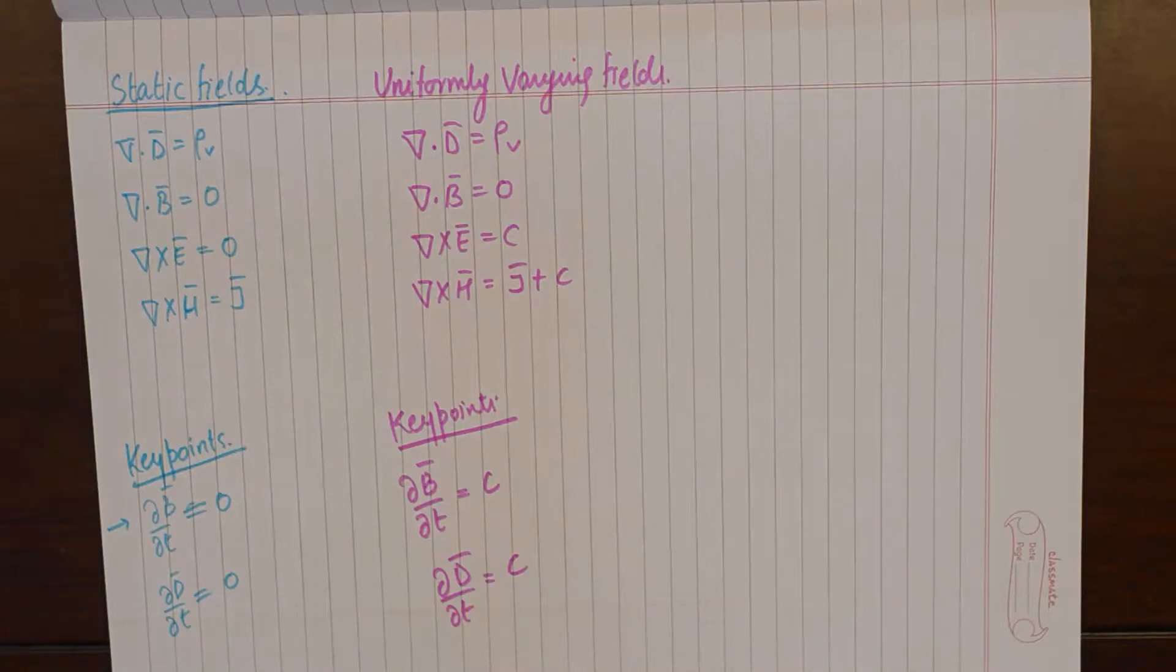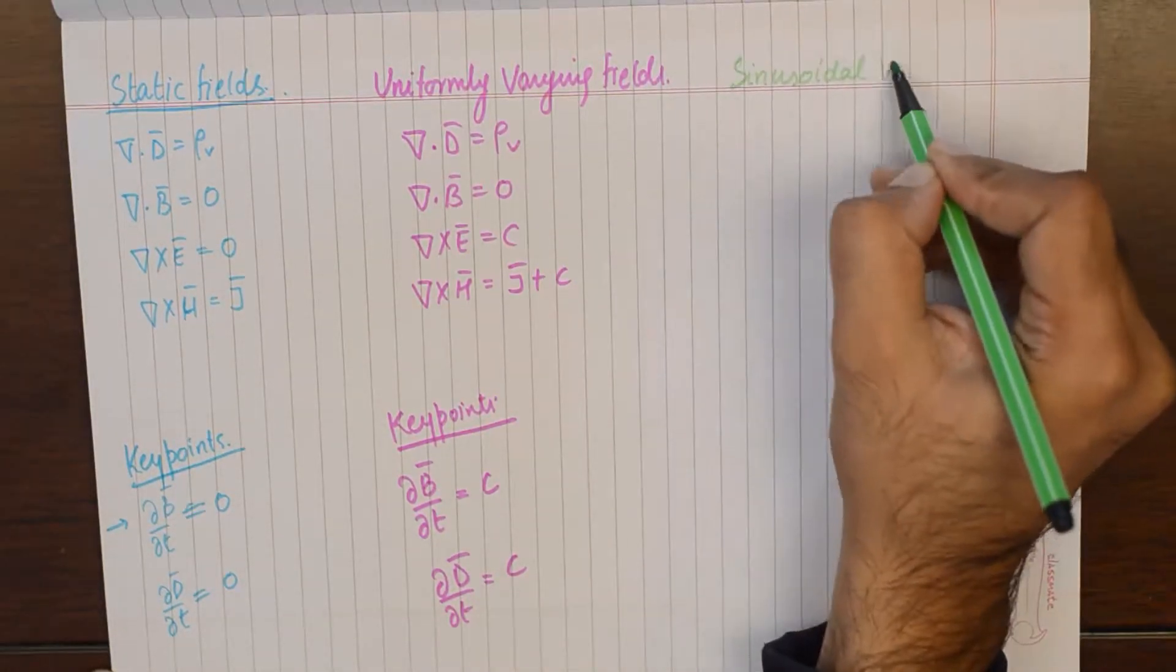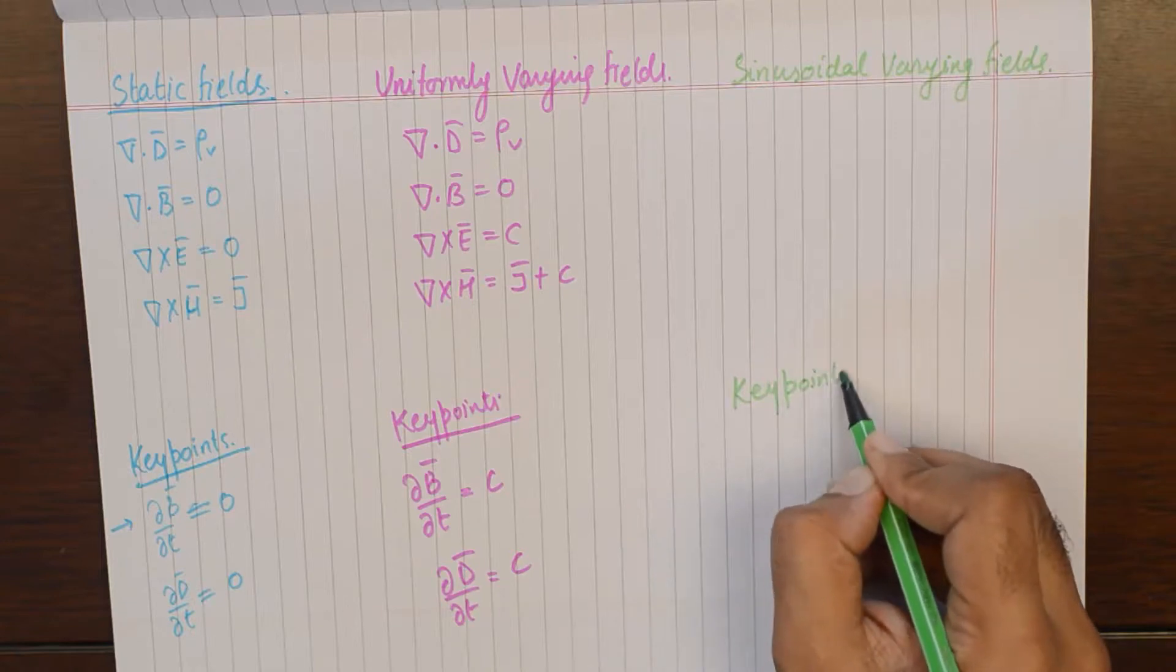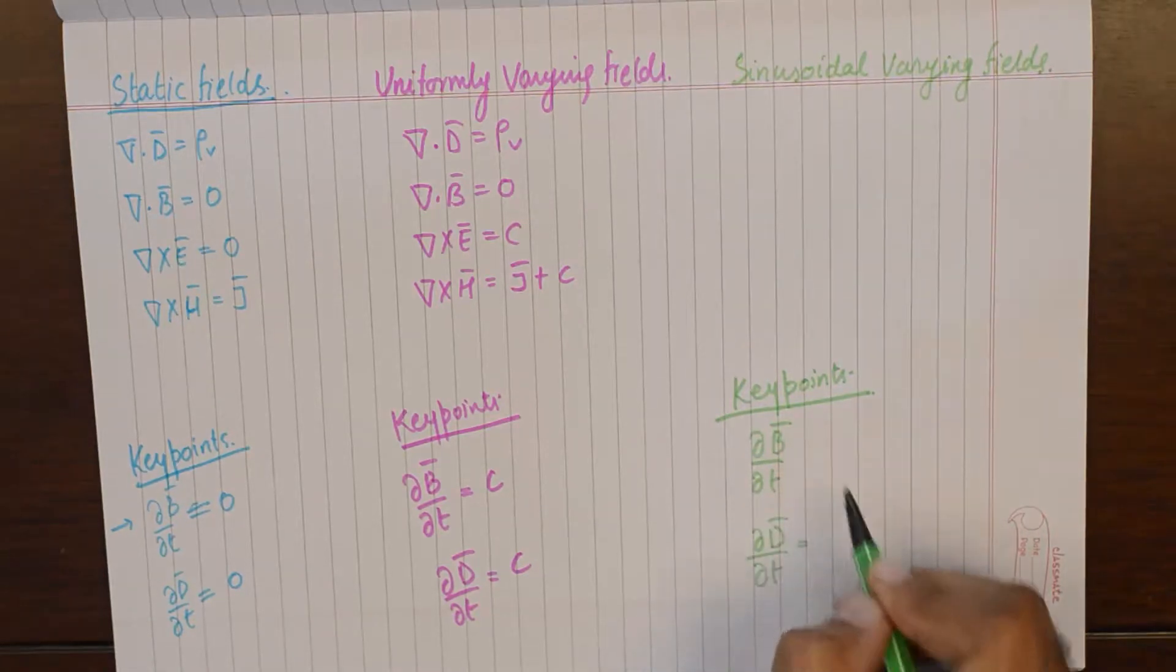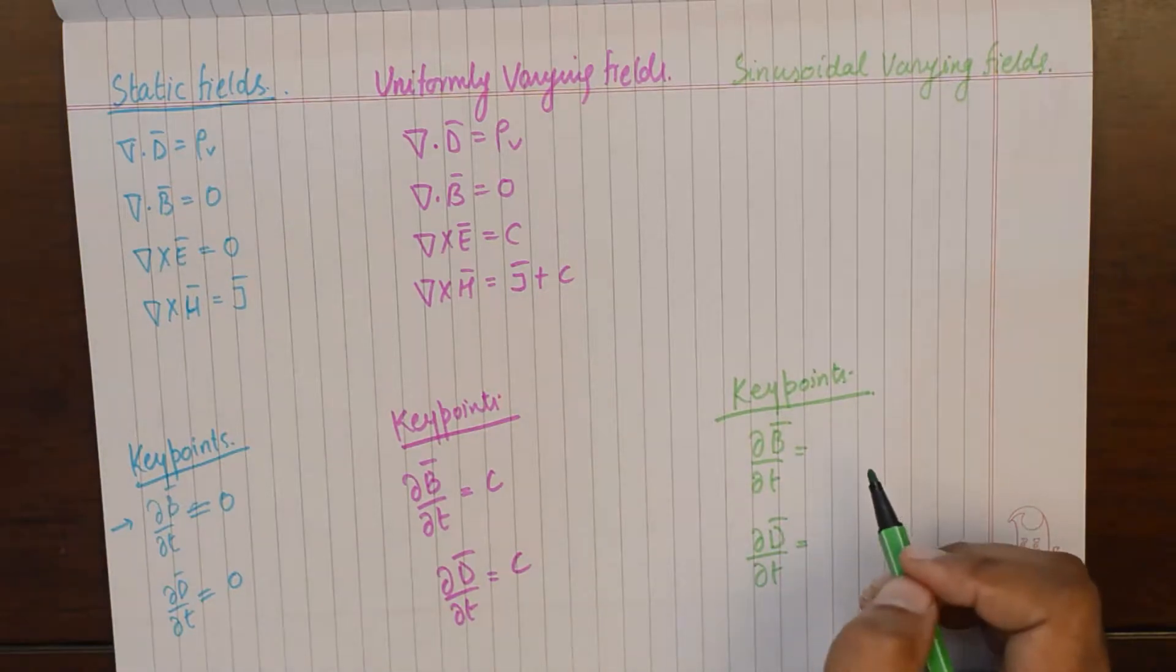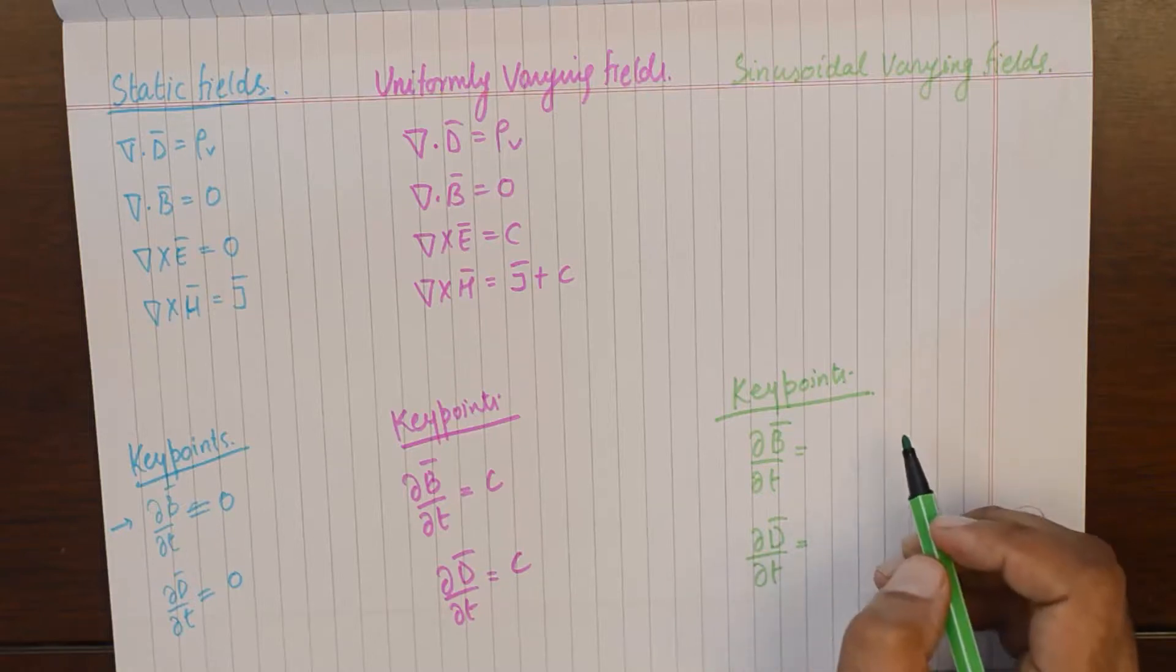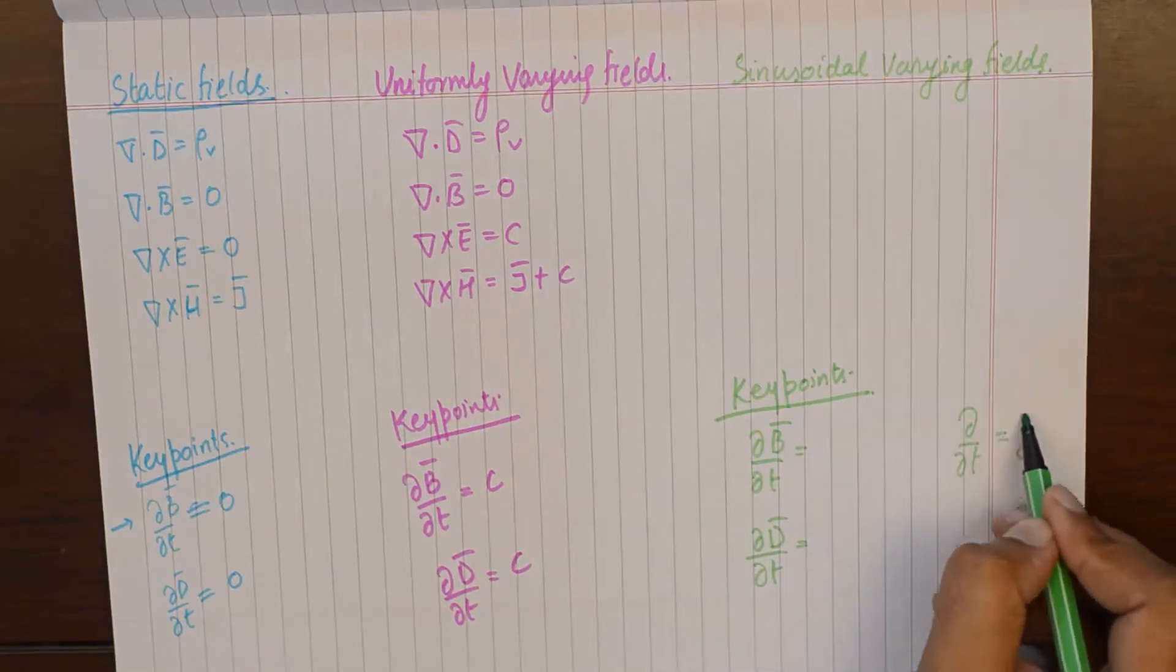Finally, if the fields are varying sinusoidally, they will also affect these two components. Because the fields are varying sinusoidally, we are going to introduce a component that should represent sinusoidal variation of the fields. I will not go into the detail of derivation. You simply can substitute ∂/∂t with jω.